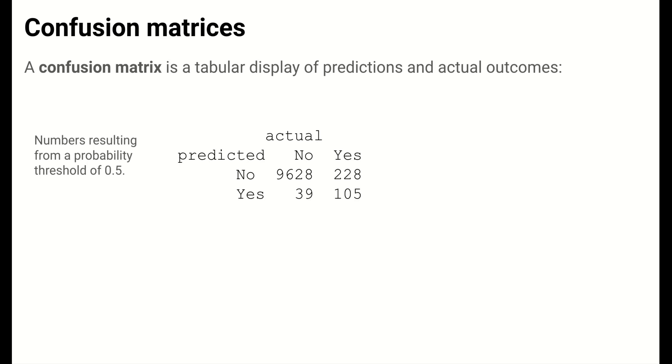The confusion matrix organizes this information to show model predictions along the rows and actual outcomes along the columns. In a two-class binary setting like this, yes-no outcomes, there are special names given to the cells of this table.